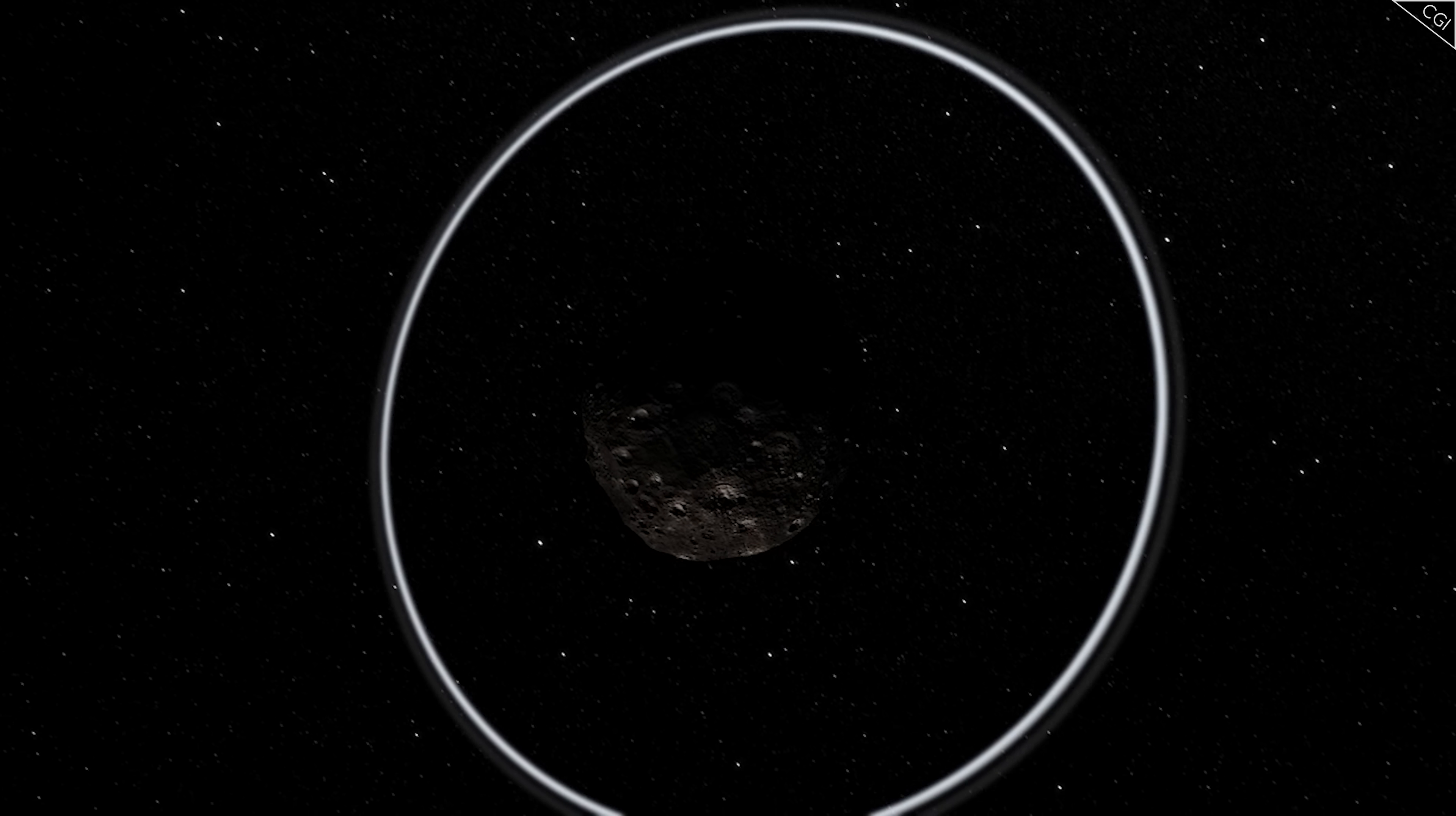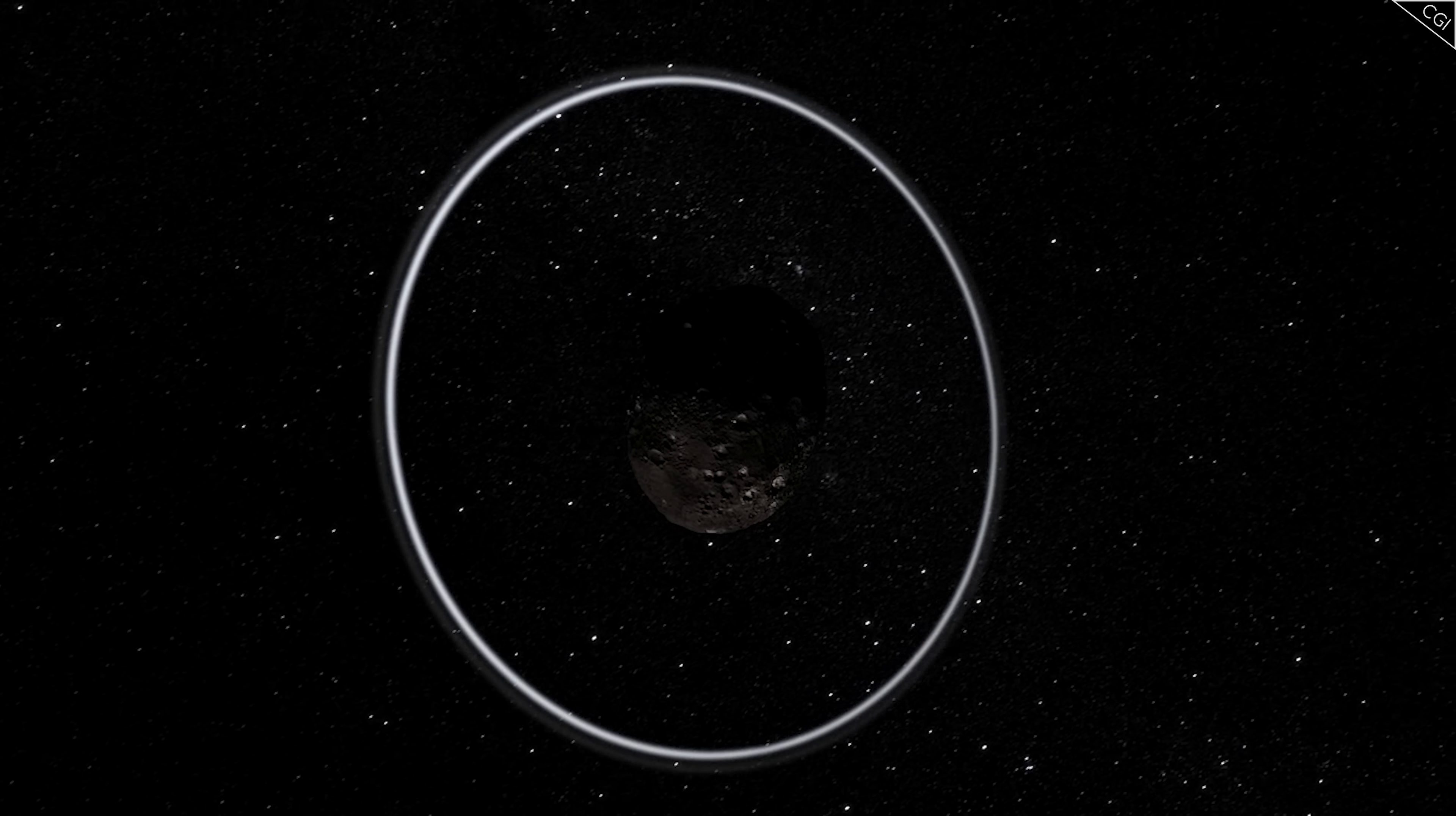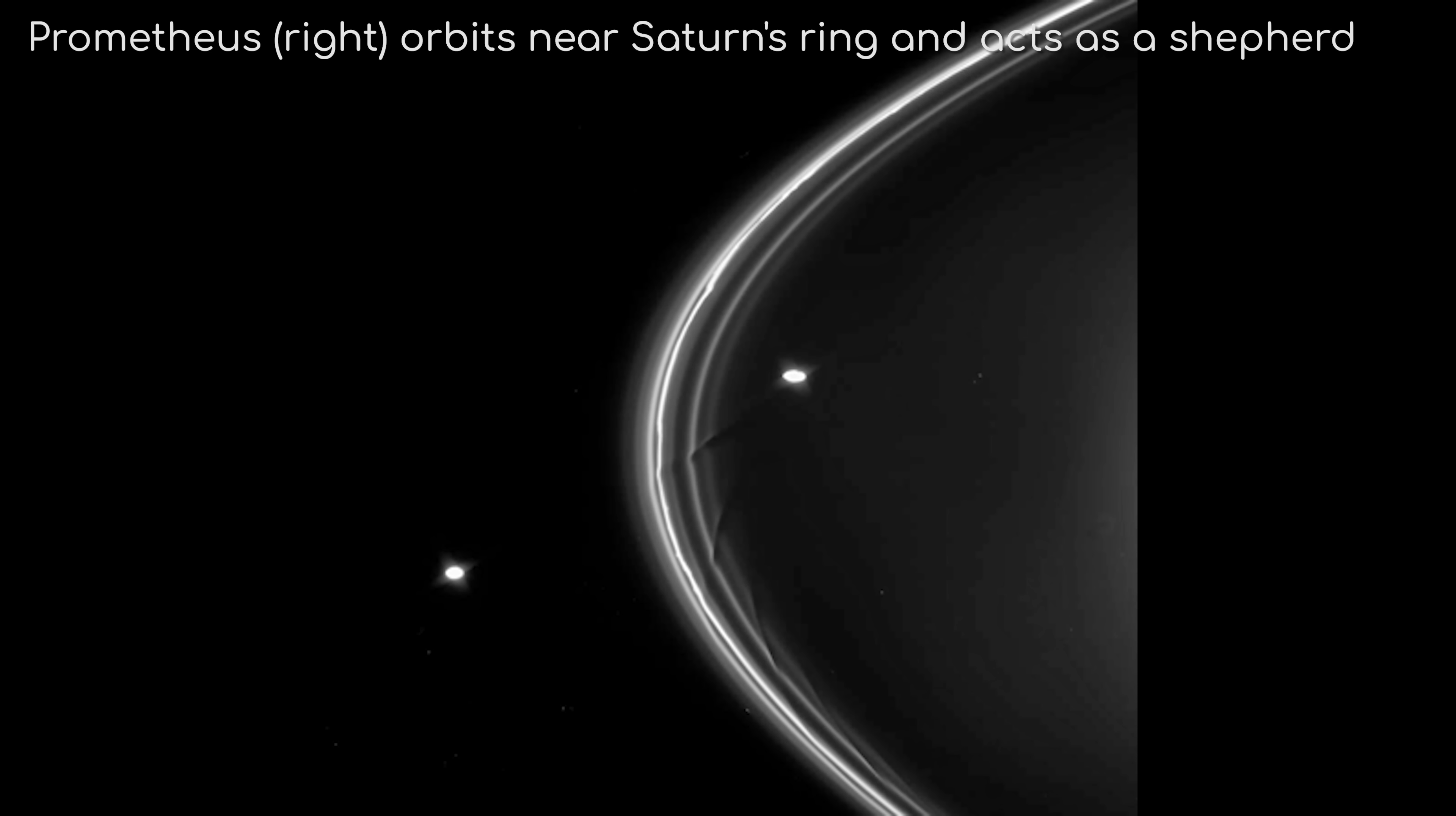For a while, scientists did not think that objects as small as Chariklo could support rings. Even now, they are unsure whether these rings are only here because they are relatively new, forming in the last few million years or so, or whether some gravitational phenomenon caused something like shepherd moons, keeping them in place.